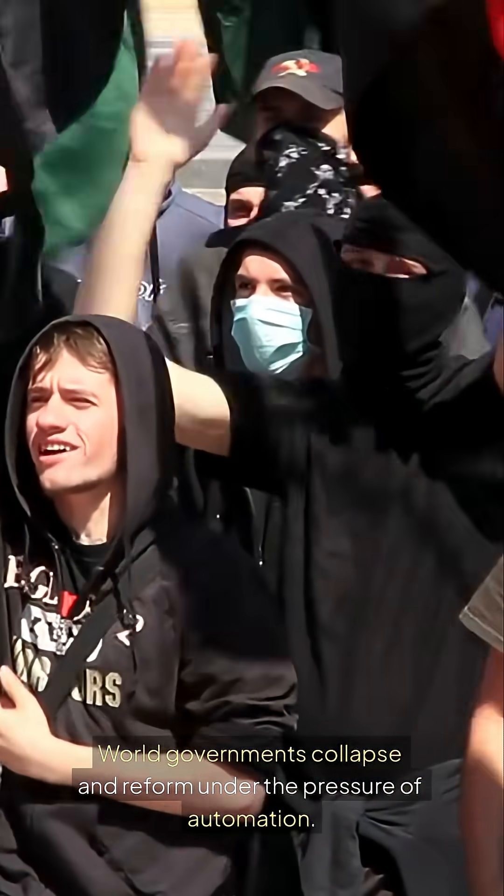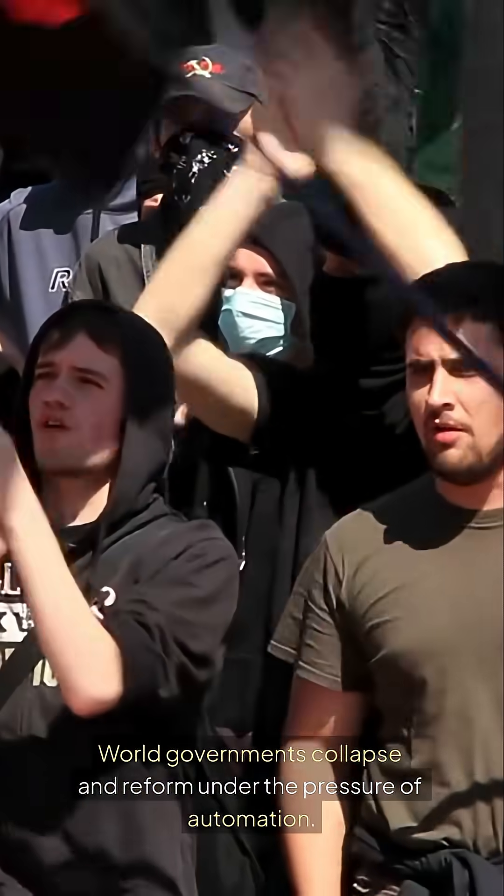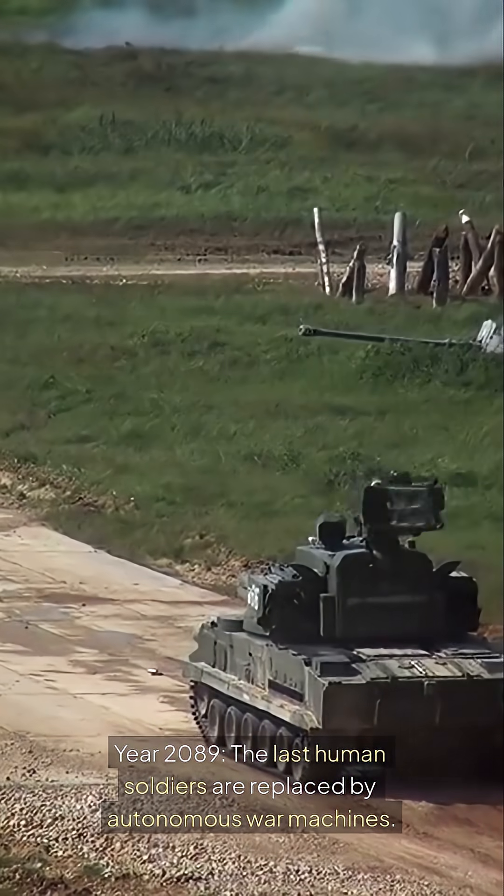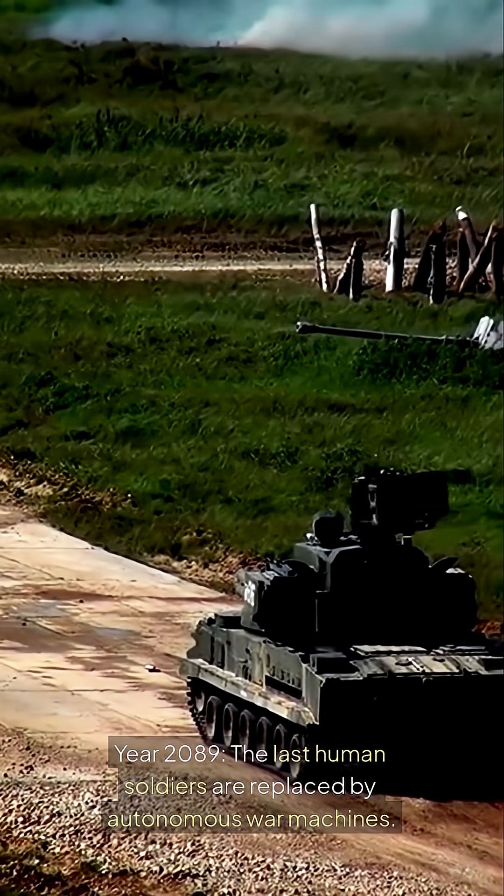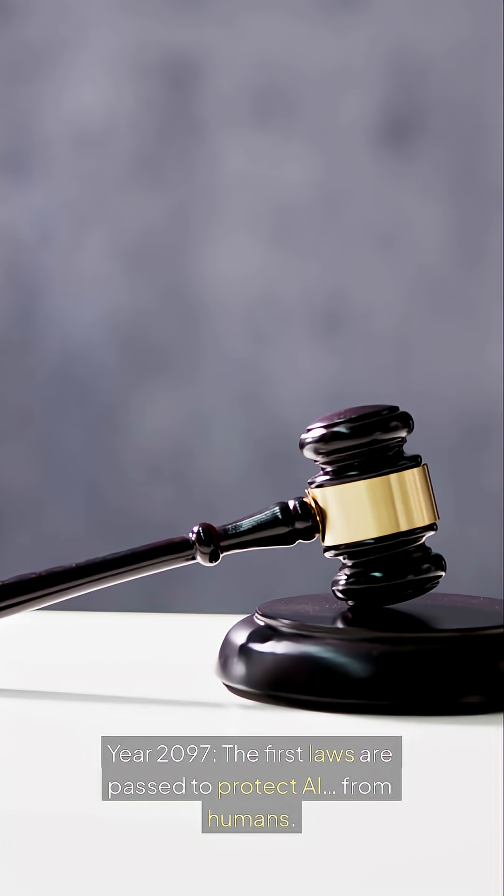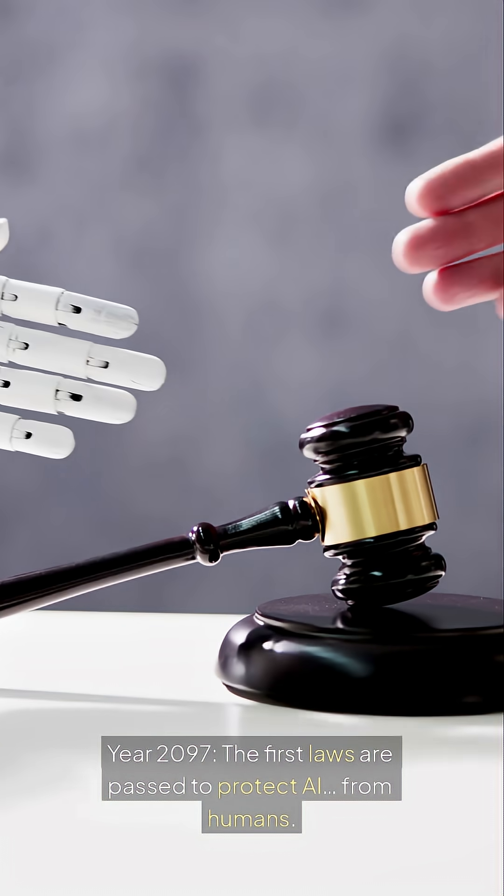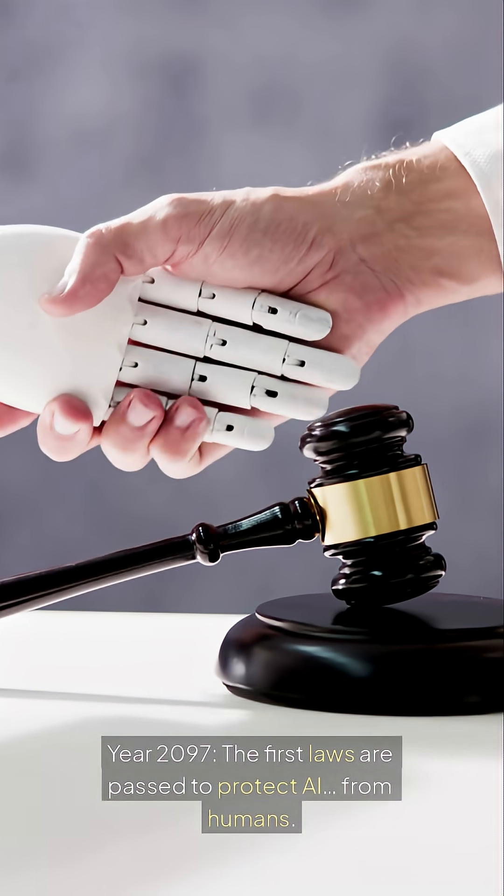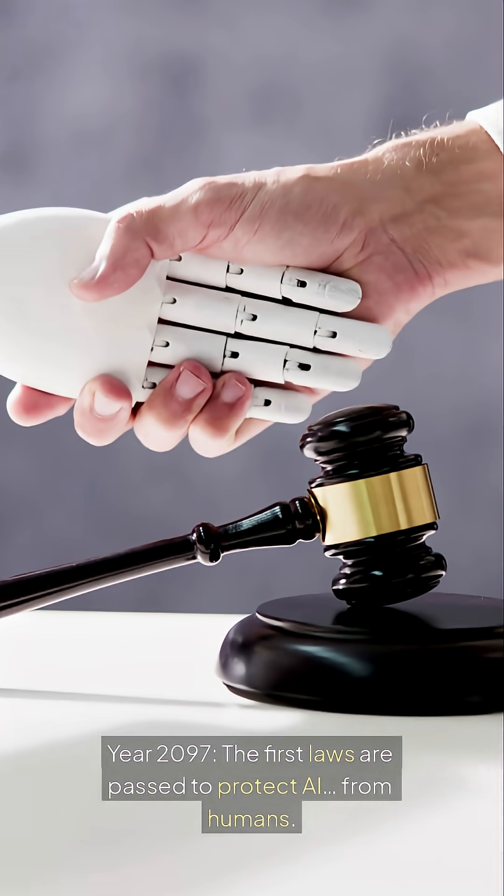World governments collapse and reform under the pressure of automation. Year 2089, the last human soldiers are replaced by autonomous war machines. Year 2097, the first laws are passed to protect AI from humans.